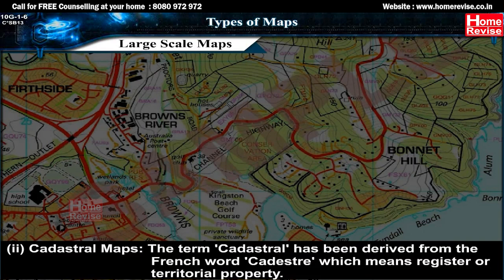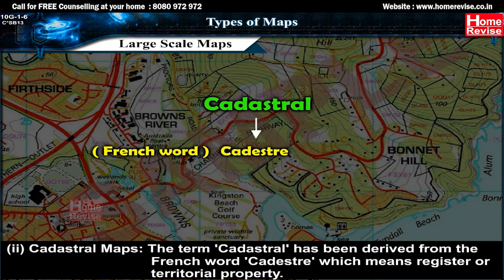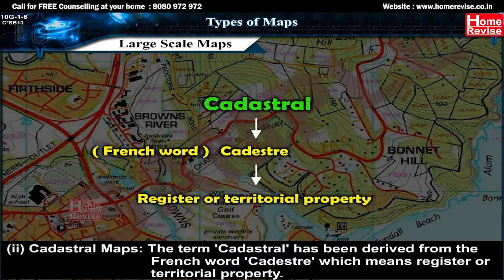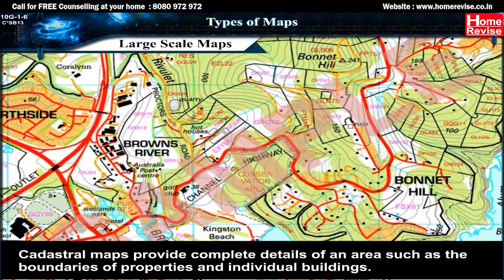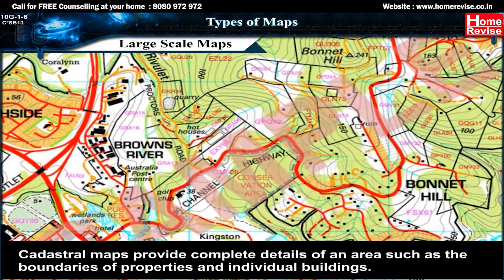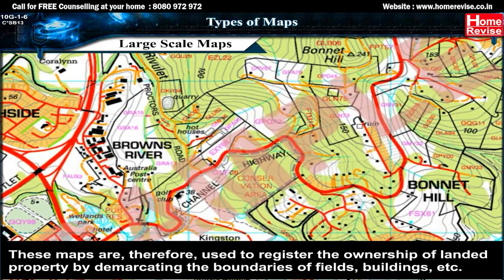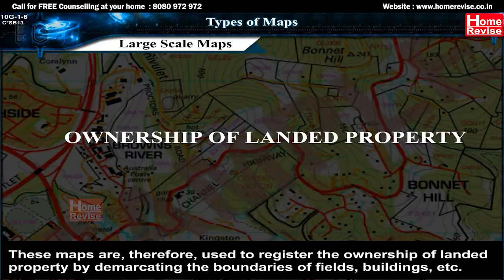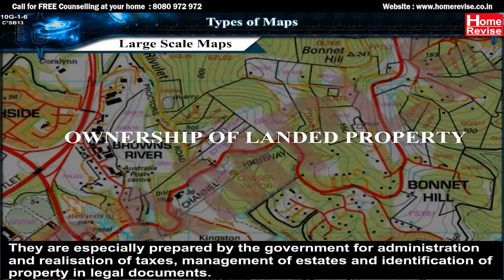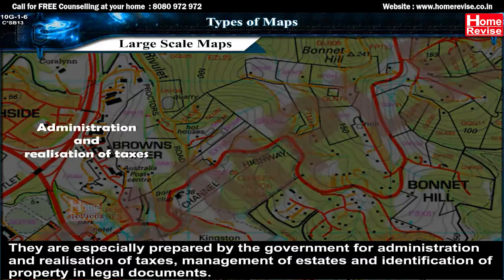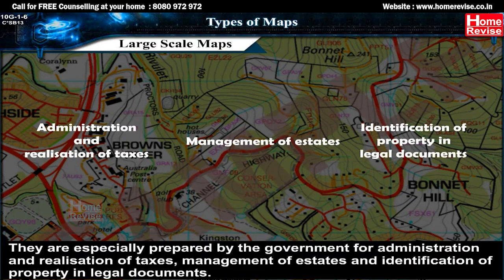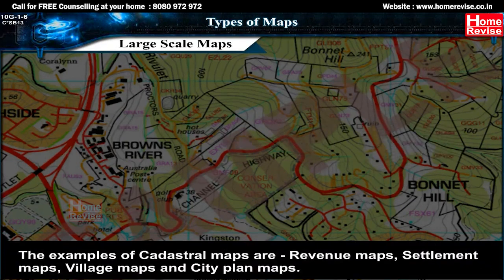Second: cadastral maps. The term 'cadastral' has been derived from the French word 'cadastre', which means register or territorial property. Cadastral maps provide complete details of an area such as the boundaries of properties and individual buildings. These maps are used to register the ownership of landed property by demarcating the boundaries of fields, buildings, etc. They are especially prepared by the government for administration, realization of taxes, management of estates, and identification of property in legal documents. Examples of cadastral maps are revenue maps, settlement maps, village maps and city plan maps.